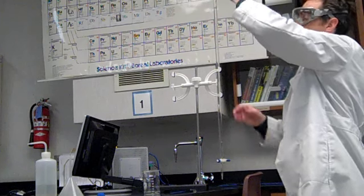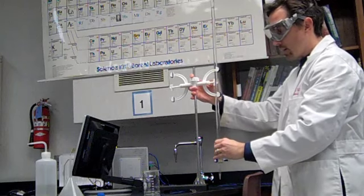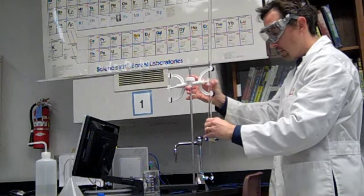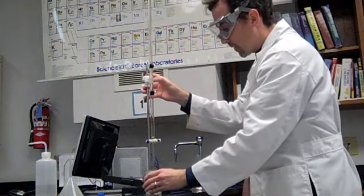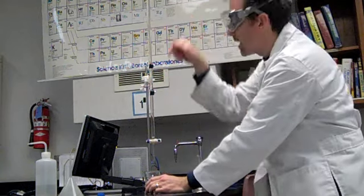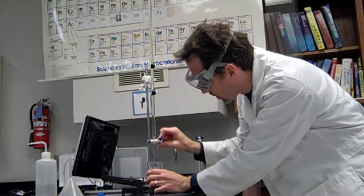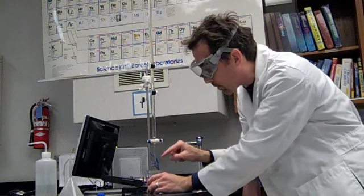So I filled it up, I take the funnel off, and now I'm going to raise it up a little bit, bring it back over the bench. And now I want to let a little bit of my base out. And so I turn the stopcock and flush it a little bit out, and now I don't have any air bubbles inside the tip.